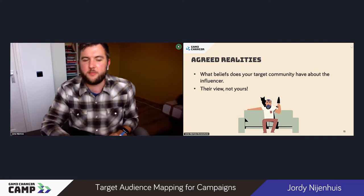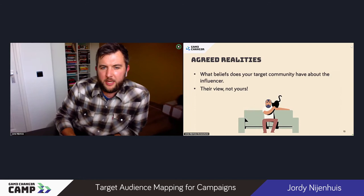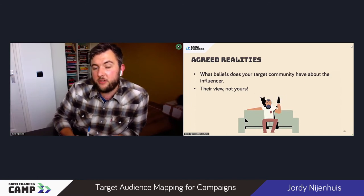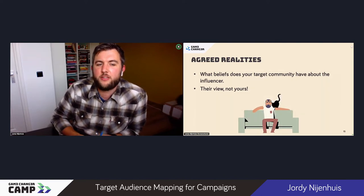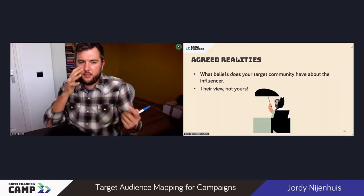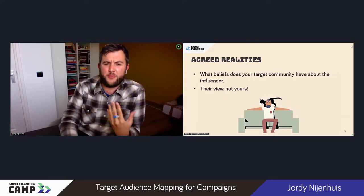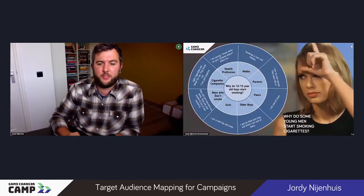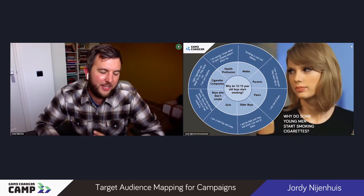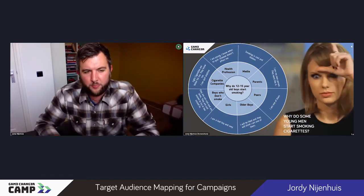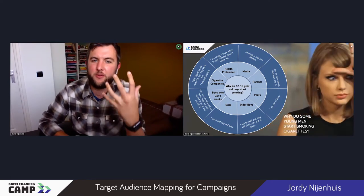The next step is about agreed realities — what kind of beliefs your target community has about the influencer. It's not about your view or how you analyze it; it's about how they see the situation. To make it more concrete, we can use the same question. Here you really need empathy — you need to put on the shoes of this 12 to 15 year old boy and think from their perspective.